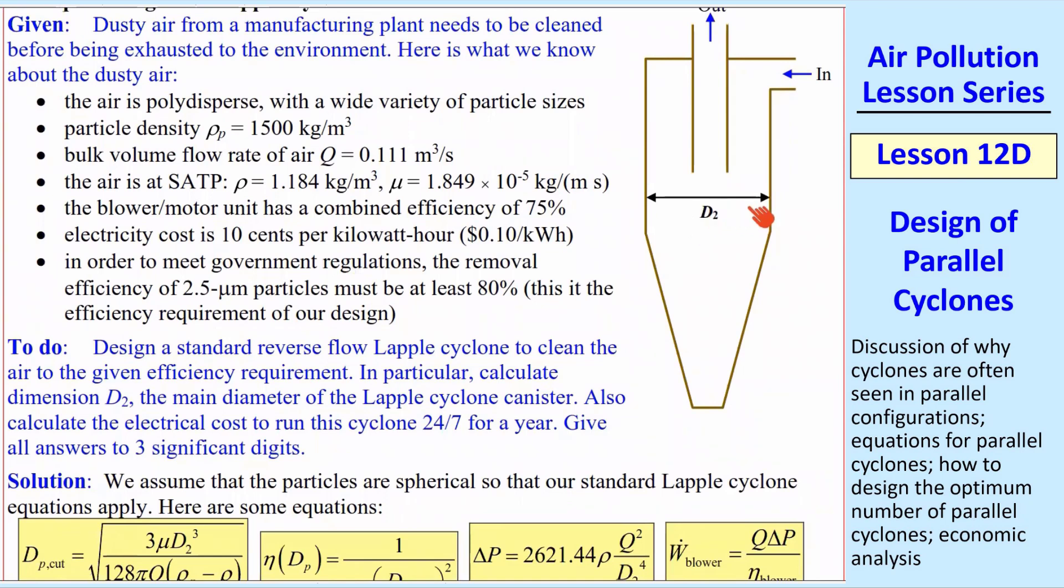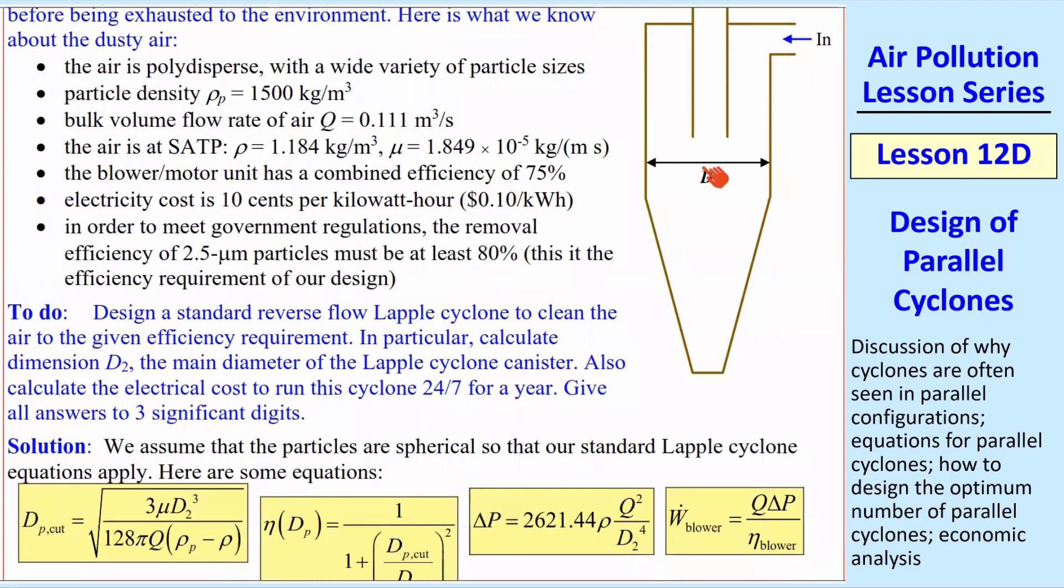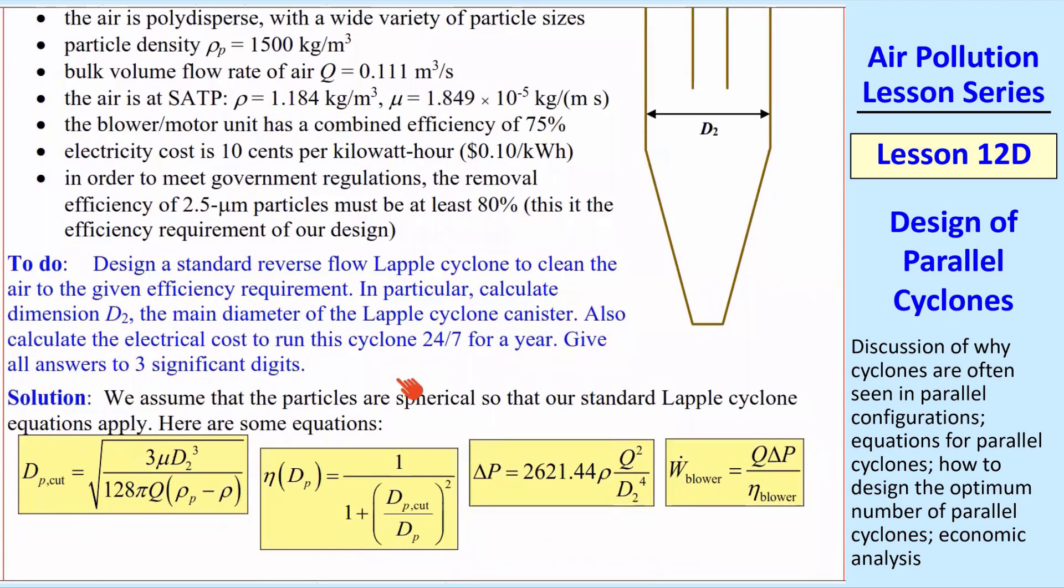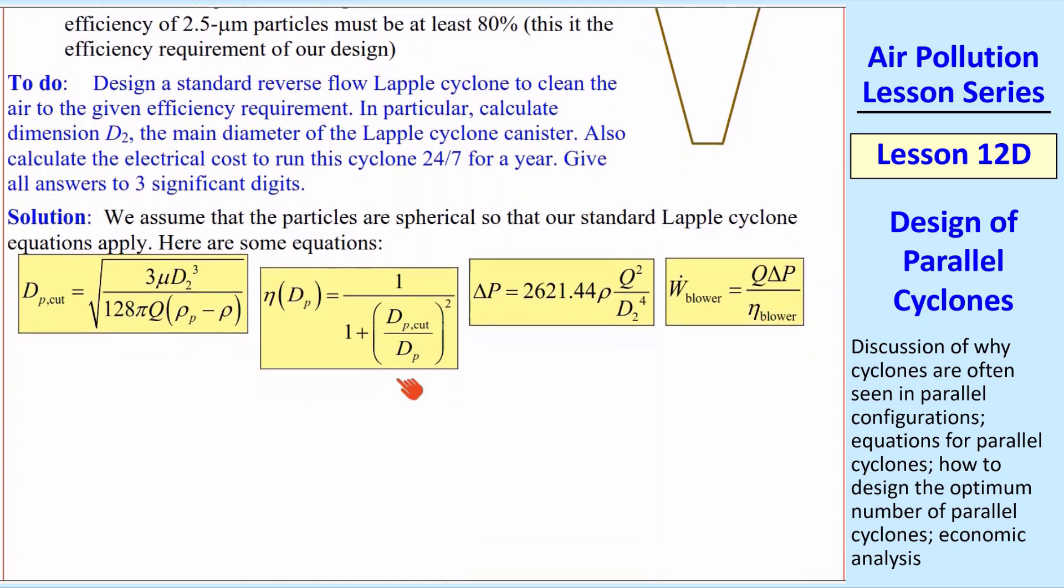So we're going to design a standard reverse flow cyclone. I have one sketched here, and all we really need to do is calculate D2 because all the other dimensions - the inlet and this pipe and all that stuff - is based on D2. So if it's a standard Lapple reverse flow cyclone, that's all we need. Once we have that, we can calculate the electrical cost to run this cyclone for a year. Here's some of the equations that we will use, and we assume that the particles are spherical. So all these equations apply, and we have everything we need, so let's get started.